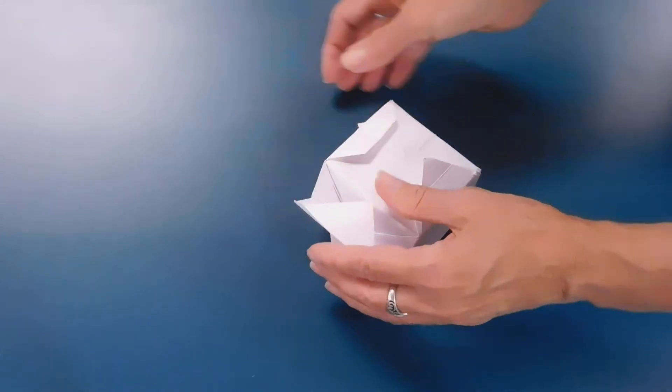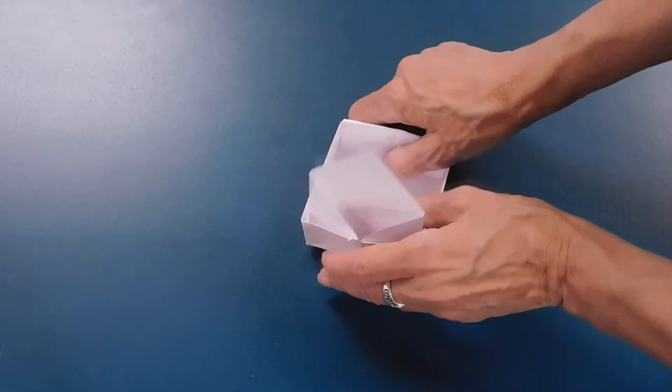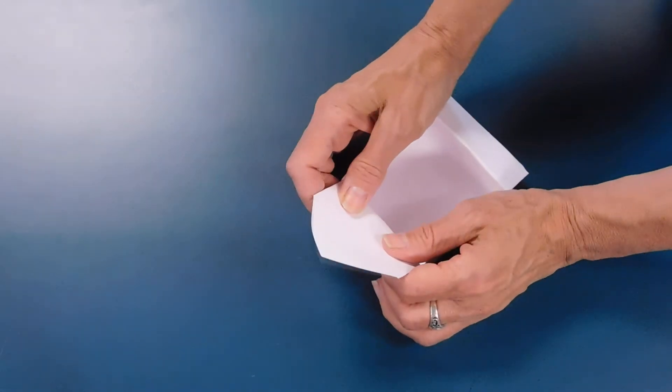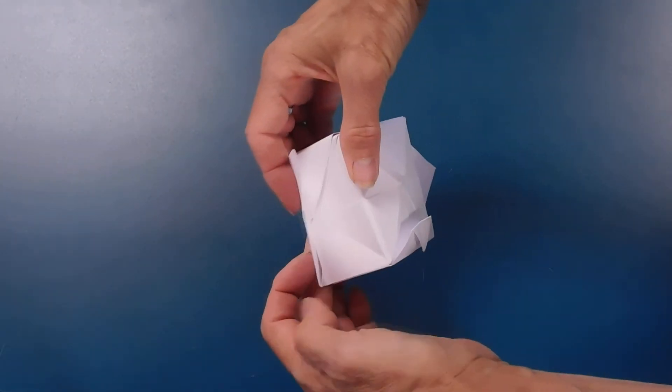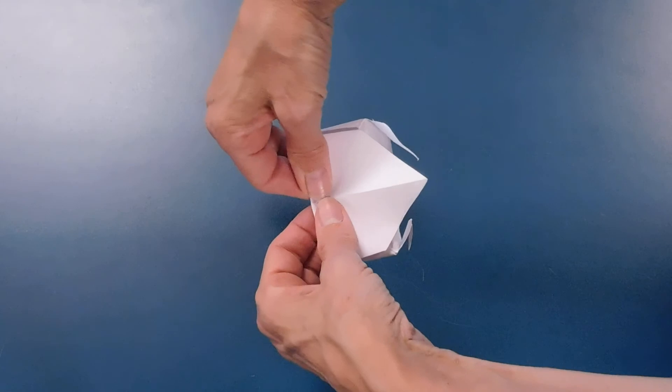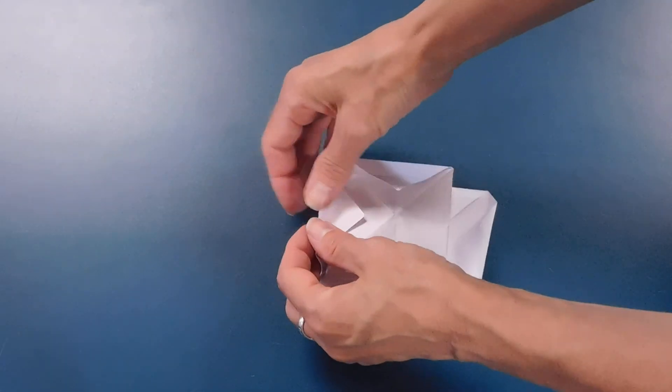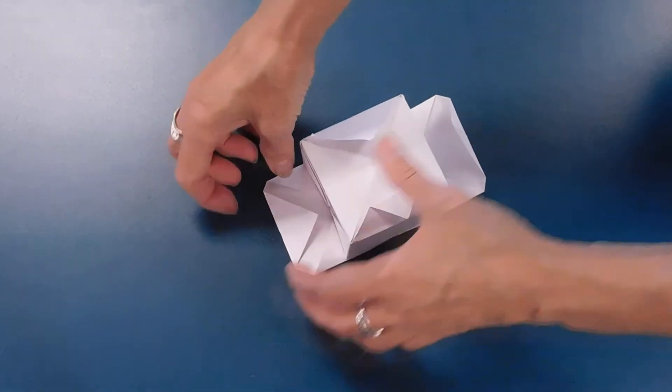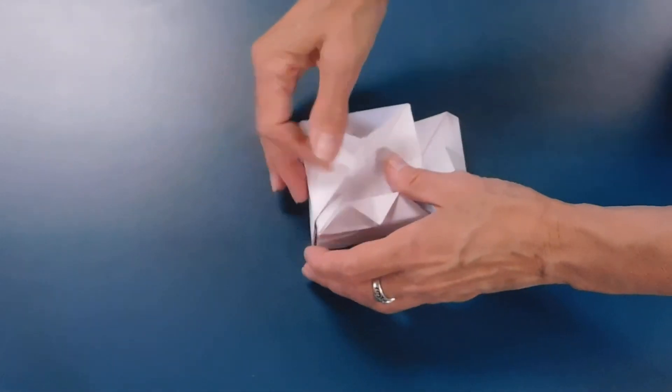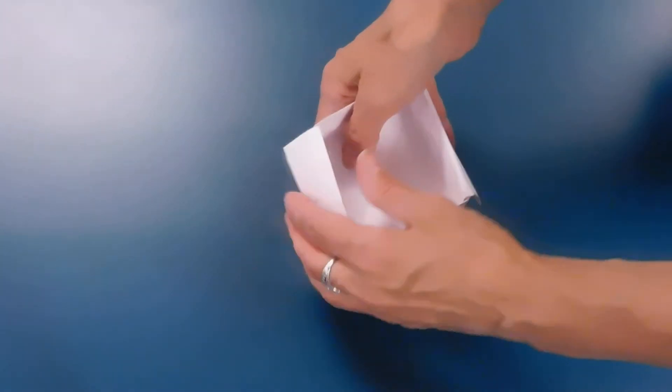And you can fold it down that way as well. Yeah, try to get a good crease there. Then you're going to do the same thing with the other side. So you're going to fold that that way. Fold it on that line there. And put it back up. And there is your box.